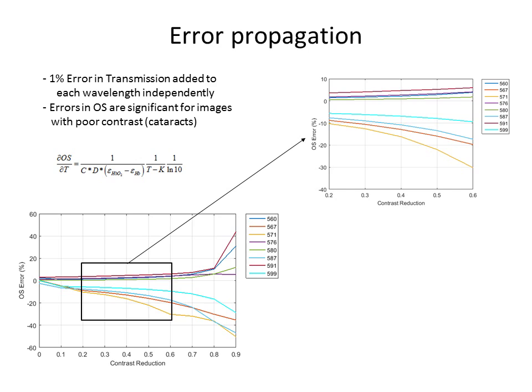Doing some analysis of the model in terms of error propagation, we can predict how it will behave, which will be quite useful once I show you the results later. We added a 1% error in transmission to each wavelength independently, and then we solved the model trying to retrieve the oxygen saturation. Here you can see, for a range of contrast reductions from 0 to 0.9, the oxygen saturation error. You can see some of the wavelengths don't have much oxygen saturation error, but some of the others are quite huge, actually.